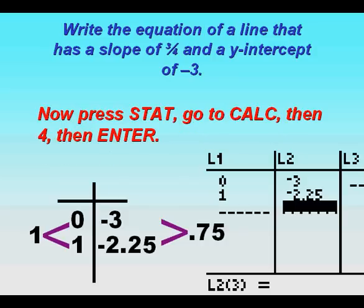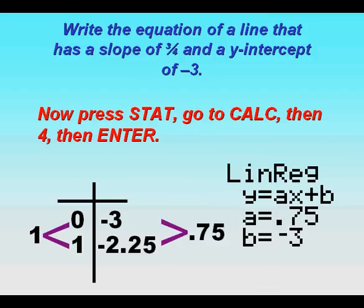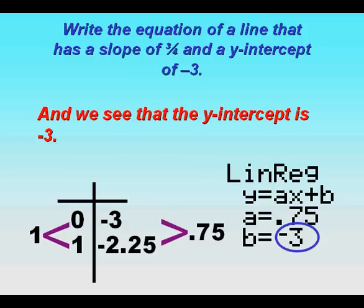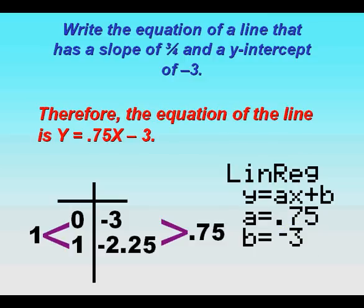And then we press stat, calc, 4 and we get a slope of 0.75, three quarters, and our y-intercept is negative 3. Therefore the equation of the line is y equals 0.75x or three quarters x minus 3. And that's our final answer.